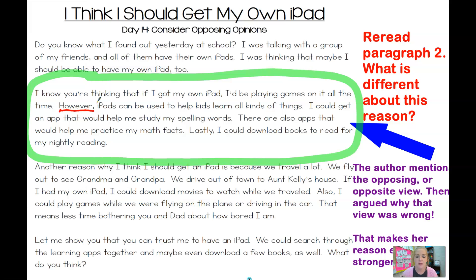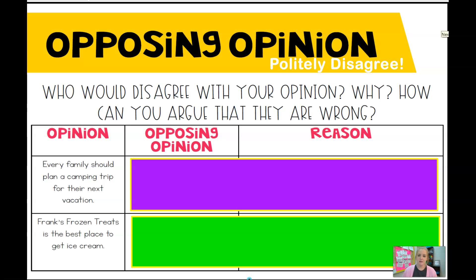So that's what we're going to be working on today. Let's practice. I've got two opinions on the left — one on the purple row, one on the green row — and opposing opinions. Remember, that means they believe the opposite of you. These are some ways that you can politely disagree. It's okay for people to have different opinions; that's what makes us all unique and special. Living in the United States, we all have our own opinions, and that's fine.